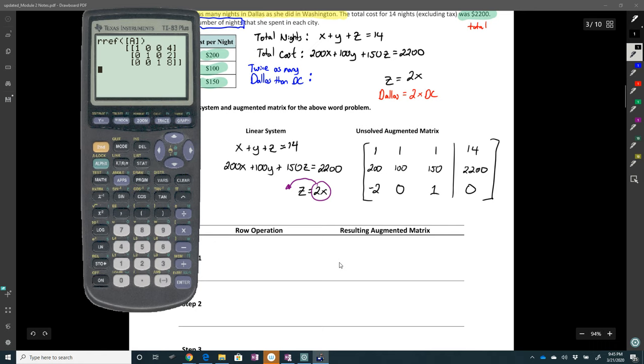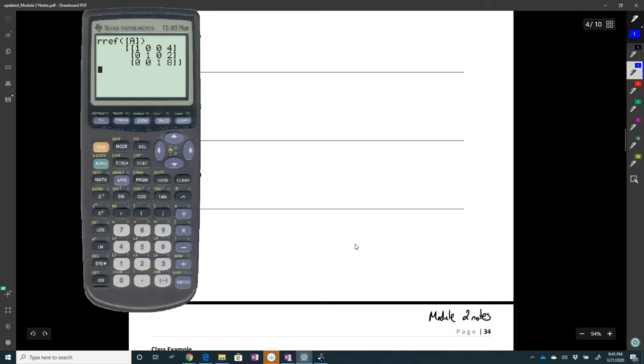So I know that at the very end, when I do all these steps, nine steps, I know that my final matrix is going to be 1, 0, 0, 4, 0, 1, 0, 2, 0, 0, 1, 8.